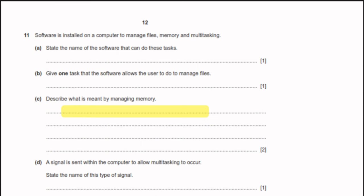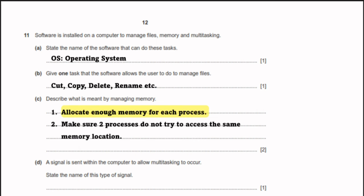Question 11: software is installed on a computer to manage files, memory, and multitasking. That software is called the Operating System (OS). It allows users to cut, copy, paste, delete, move, and rename files. Managing memory means allocating enough memory for each process and ensuring two processes do not try to access the same memory location. A signal sent within the computer to allow multitasking to occur is called an interrupt.